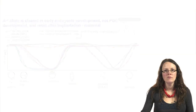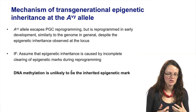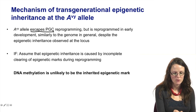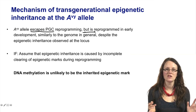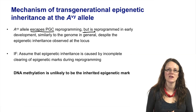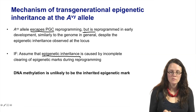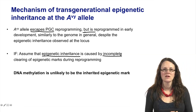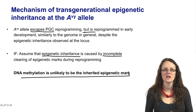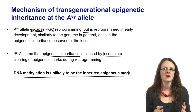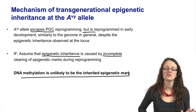To summarize: we know that the AVY allele appears to escape primordial germ cell reprogramming, but it is reprogrammed in early embryonic development, just like the rest of the genome, both when inherited paternally and when inherited maternally. So if we assume that epigenetic inheritance is caused by incomplete clearing of epigenetic marks, what this tells us is that DNA methylation is really highly unlikely to be that heritable epigenetic mark. We can't find a time where, when we see transgenerational epigenetic inheritance, there is any persistence of DNA methylation marks.